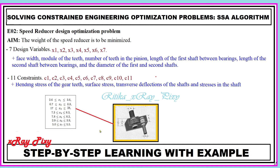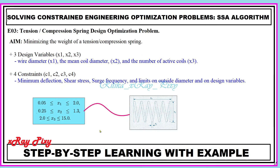For the third problem, we have to minimize the weight of a compression spring. In this problem we have three decision variables — x1, x2, x3 — and we have four constraints that we have to satisfy.